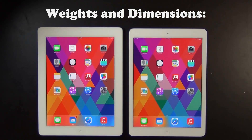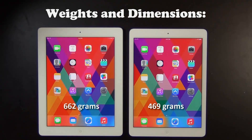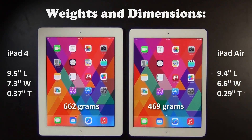Now let's move on to weight and dimensions. The iPad 4 weighs 662 grams whereas the iPad Air weighs only 469 grams — quite a significant change. The iPad Air measures 9.4 inches long, 6.6 inches wide, and 0.29 inches thick, compared to the iPad 4 at 9.5 inches long, 7.3 inches wide, and 0.37 inches thick. The size and weight have clearly gone down with the iPad Air, which is always a plus.